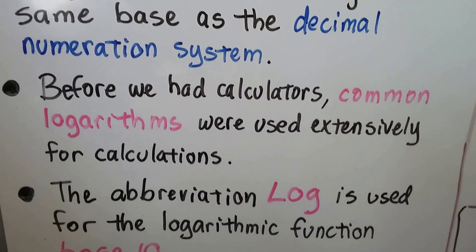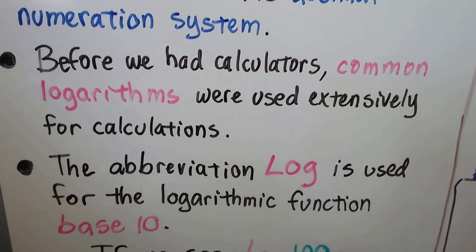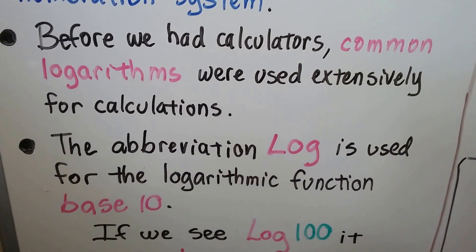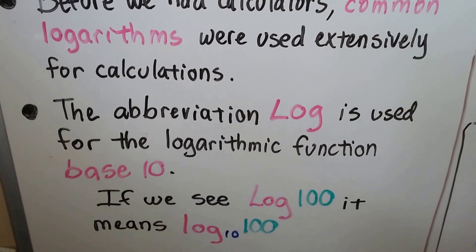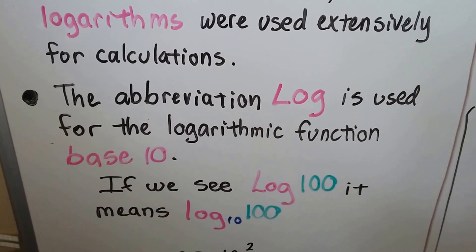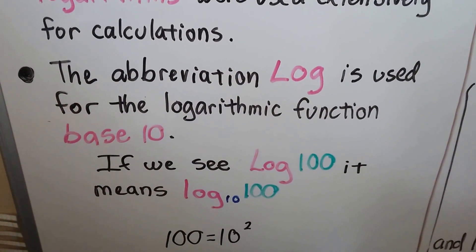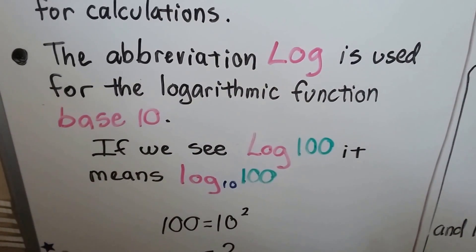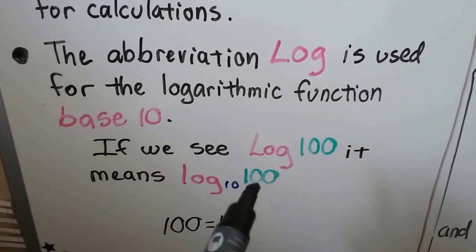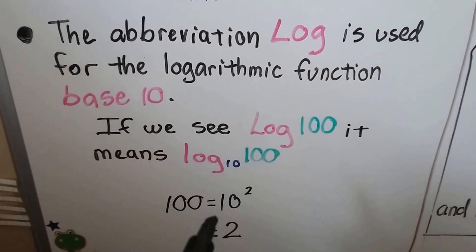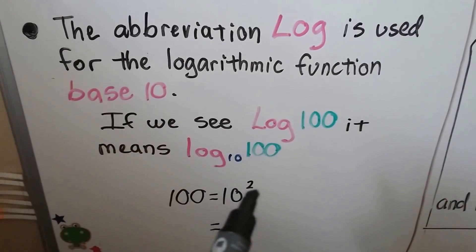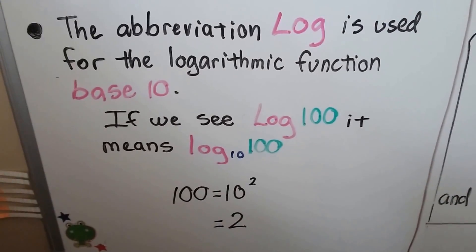Before we had calculators, like when I was in high school, common logarithms were used extensively for calculations. The abbreviation log is used for the logarithmic function base 10. So if we see log 100, it means log base 10 of 100. That would be 10 to the second power, so log 100 would be 2.